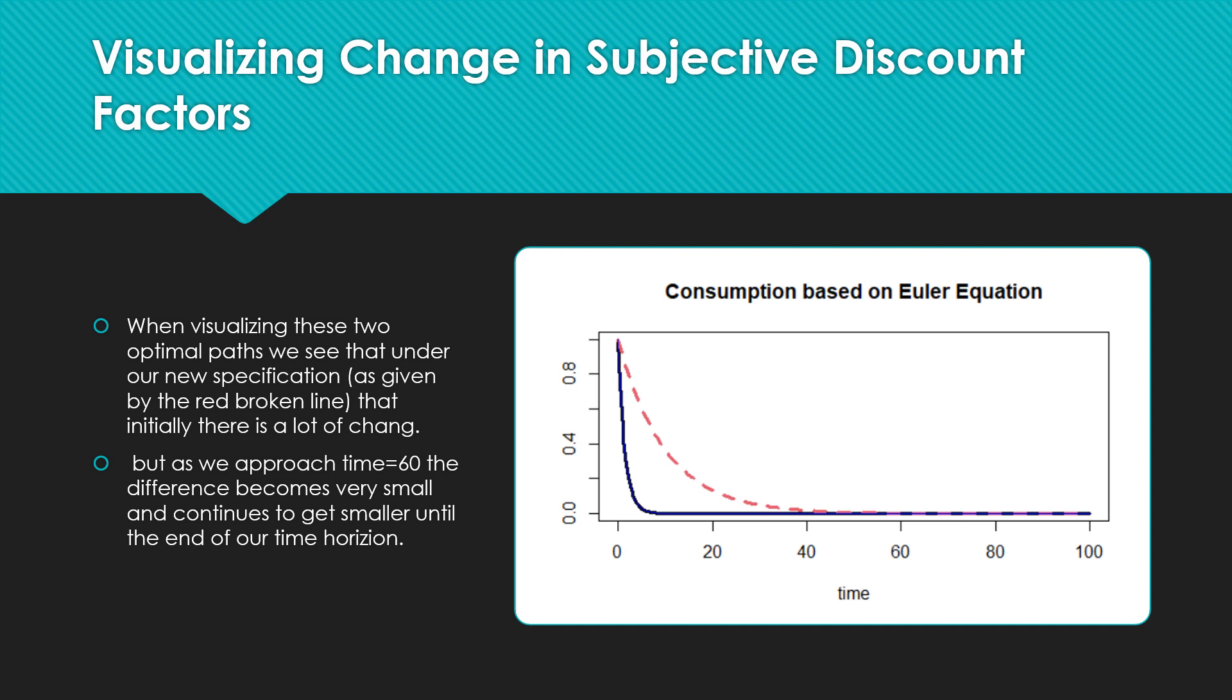So I hope this video, really, in about a little over four minutes, illustrates that we can use these Euler equations in terms of visualizing these optimal paths and have an intelligent conversation about how our parameter changes will change these optimums, not just for one period, but for many periods over in the future. So I hope this video helps. Take care.